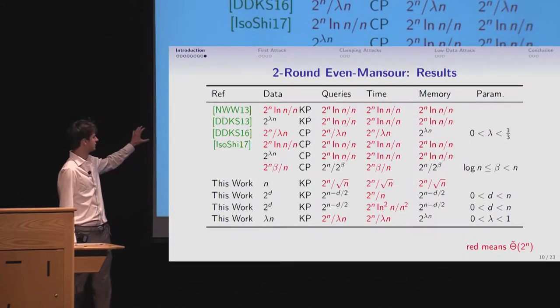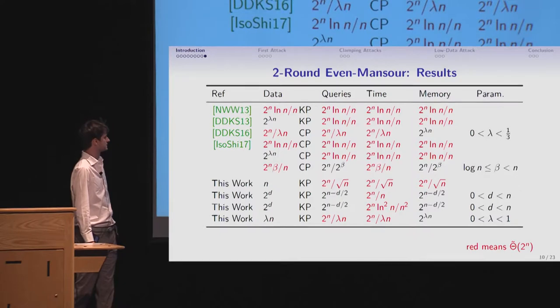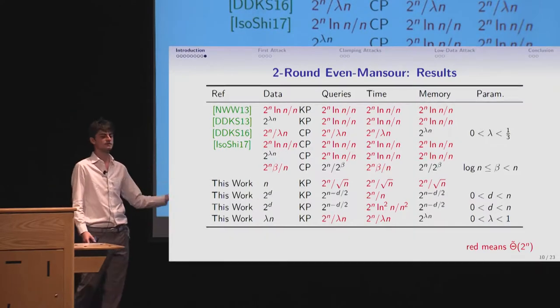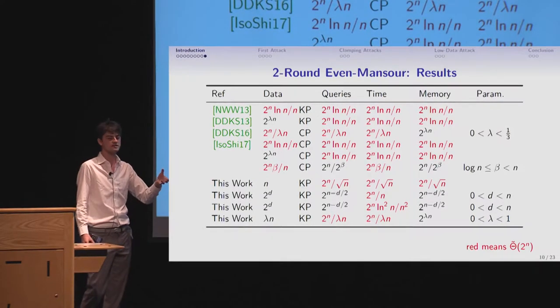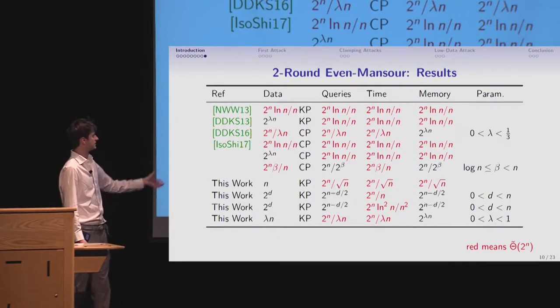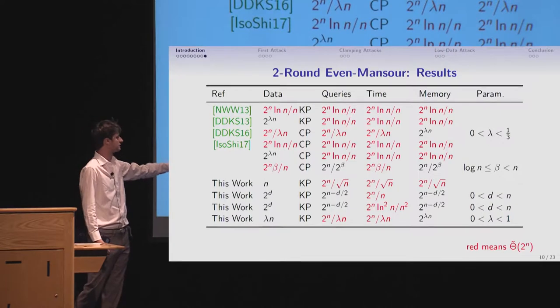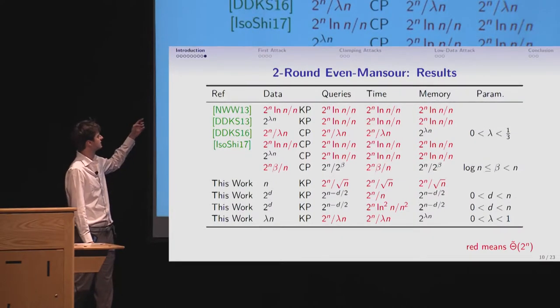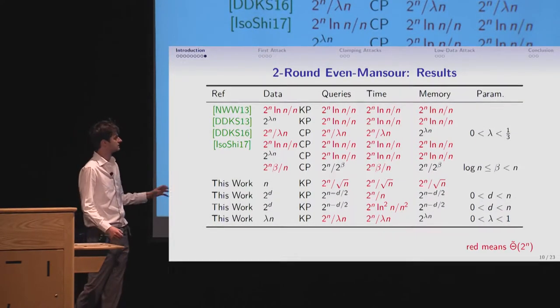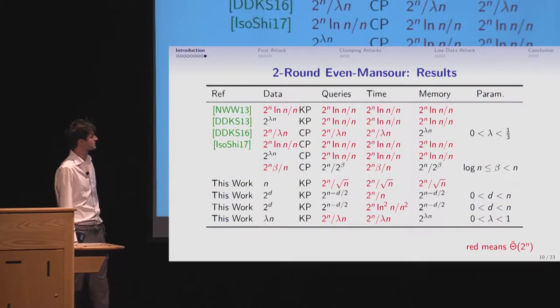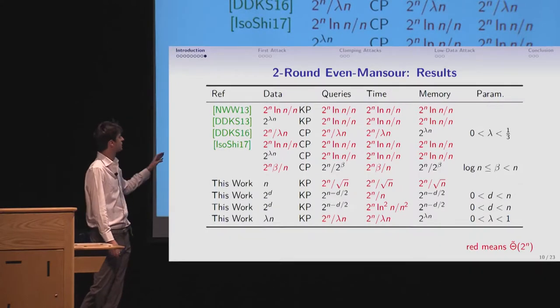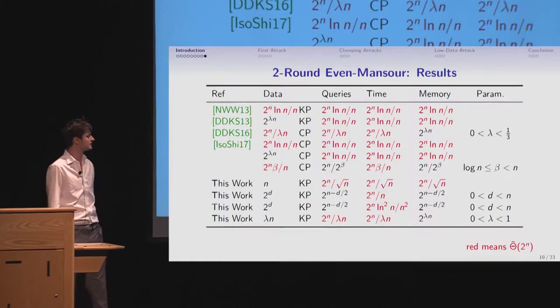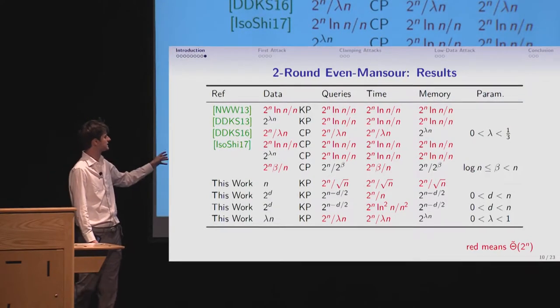And the result is we could quite effectively reduce the online complexity and the memory at the same time, both that are already potentially more costly than processing time. So you see the previous results and four attacks I will explain later in our paper. First thing you can see is I've put in red all the complexity that is close to 2 to the n up to log factor. And you can see in the time column, everyone is red. And we don't really know how to do better than this. However, if you look at previous attacks, you get either the data or the memory in red, even for any parameter you choose. However, in the last three or one of our attacks, we can effectively reduce the data and the memory significantly below 2 to the n while keeping in the known plaintext model.